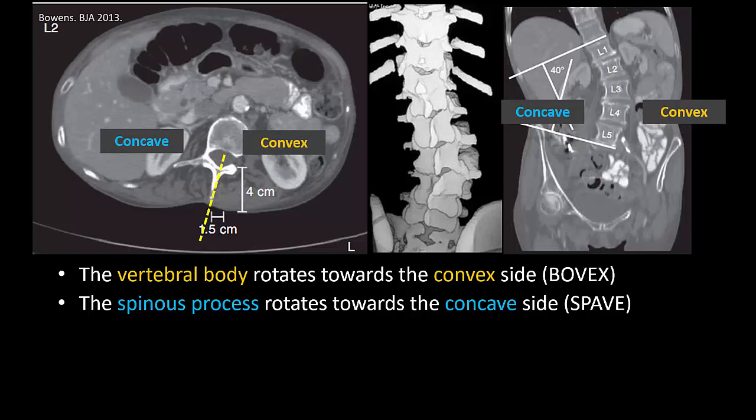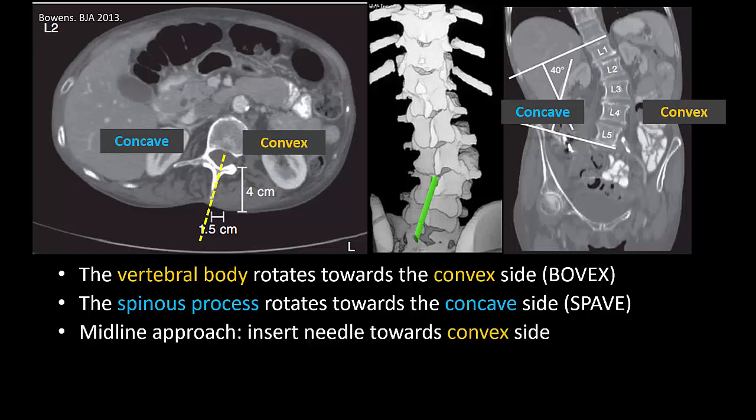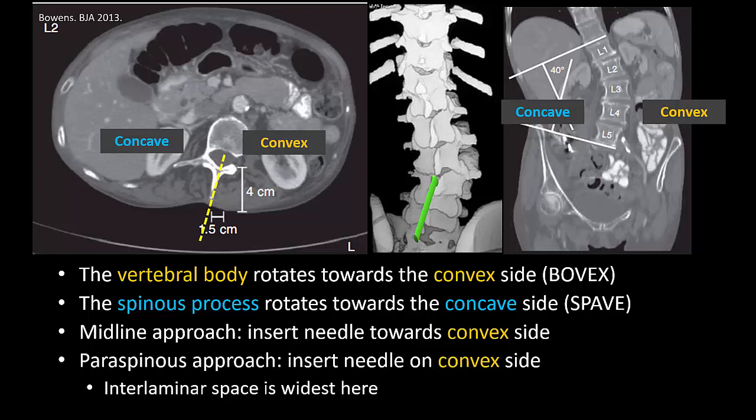As you can see, what this means is that in the midline approach between two spinous processes, the needle has to be angled towards the convex side of the curve. The interlaminar spaces are widest on the convex side of the curve. Therefore, if using a paraspinous or paramedian approach, insert the needle on the convex side, but the needle direction is often perpendicular to the skin rather than angled as we usually do. This will be illustrated later in some examples.